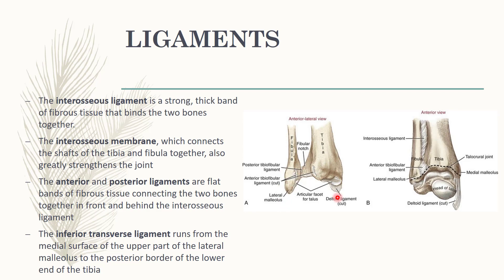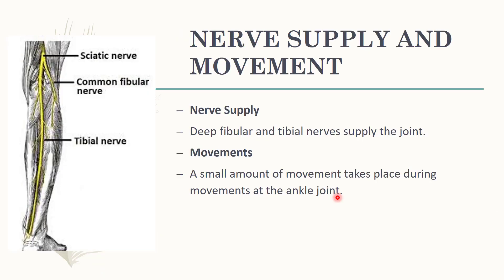Regarding nerve supply and movement: the deep fibular nerve, also called the deep peroneal nerve, which is a branch of the common peroneal nerve, and the tibial nerve supply this joint. A small amount of movement takes place during movements at the ankle joint. Since this is a fibrous type of joint, only very little movement occurs at the distal tibio-fibular joint.